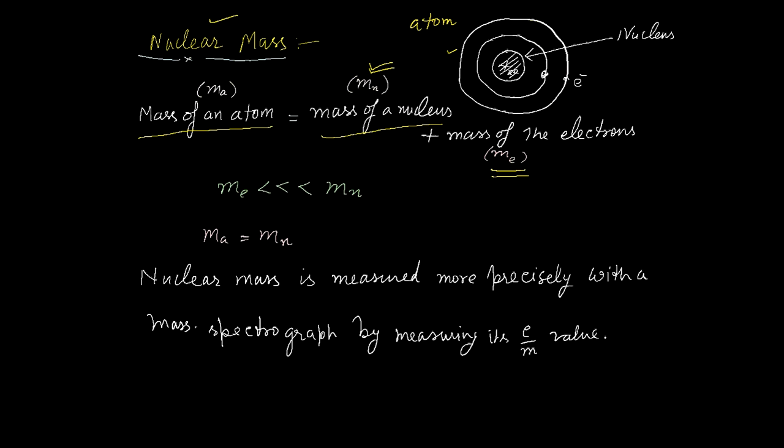We know that the mass of the electrons is very small compared to the mass of the nucleus, so one can ignore the total mass of the electrons.